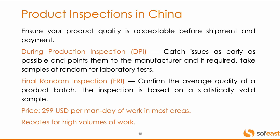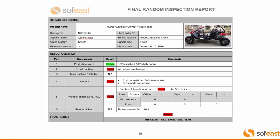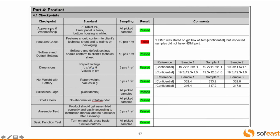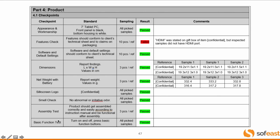For product inspections — the core service of our quality assurance department — the main types are the during-production inspection to catch issues early, and the final random inspection where we pull already-packed samples at random, check the quantity, and assess average quality by pulling samples from different boxes at random. This is based on a statistically valid sampling plan using the AQL tables I already showed you. The price is per man-day of work, and usually if the product is not excessively complicated and there are only one to three types of products, it's one man-day. We go down the checklist agreed on beforehand — or if you send us your specifications, we use them as the checklist — and we take photos along the way to show what we have done.